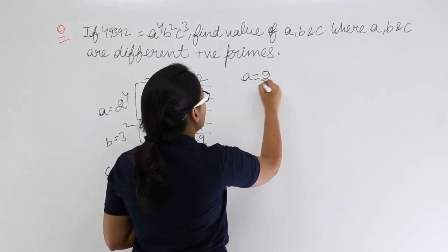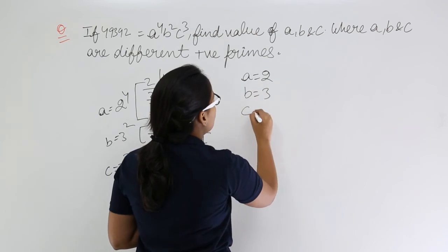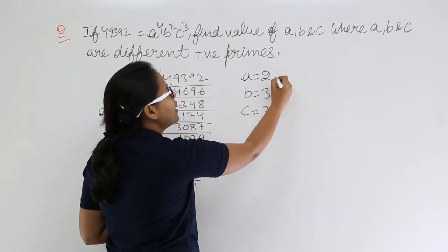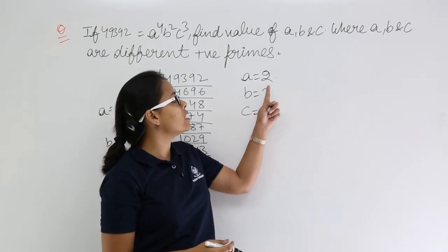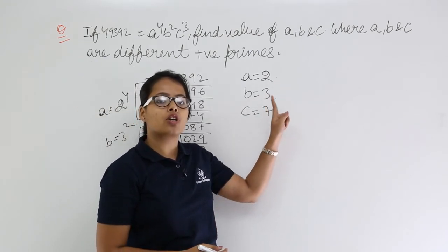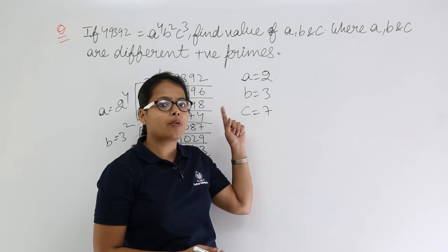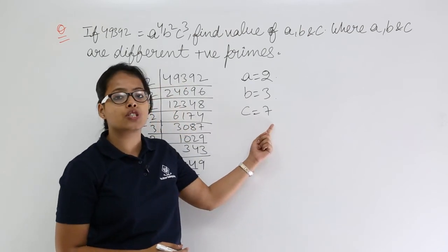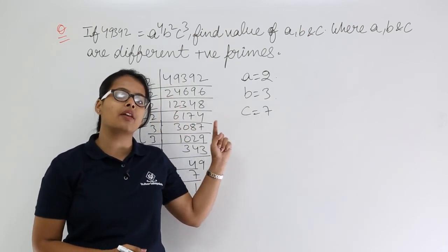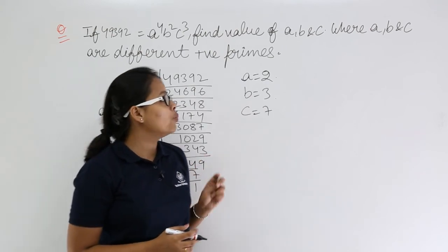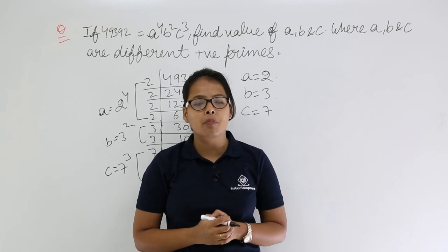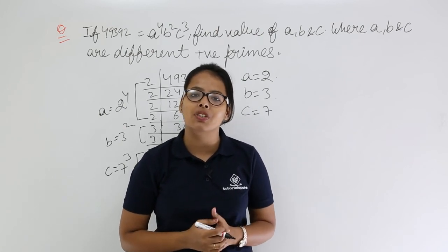a is 2, b is 3, and c is 7. You can see that all these numbers are positive numbers as well as prime numbers. 2 is divisible by 2 and 1 but not by any other number. Same goes for 7. 7 is divisible by 7 and 1 but not by any other number. I hope there should be no doubt here. I will be taking more problems in the next video lecture. Thank you.